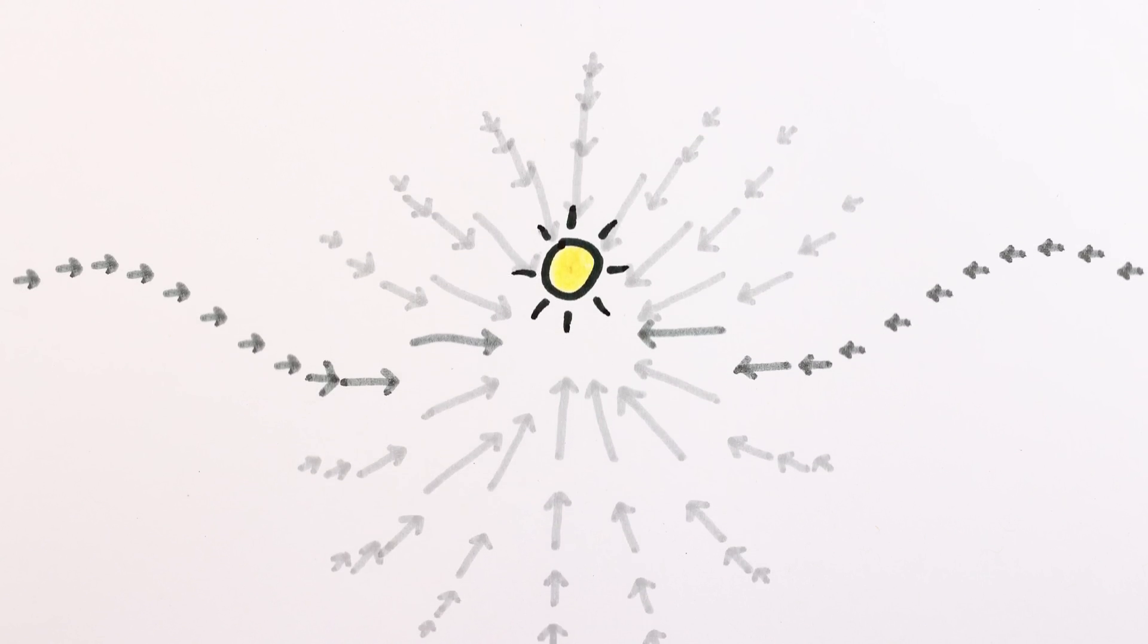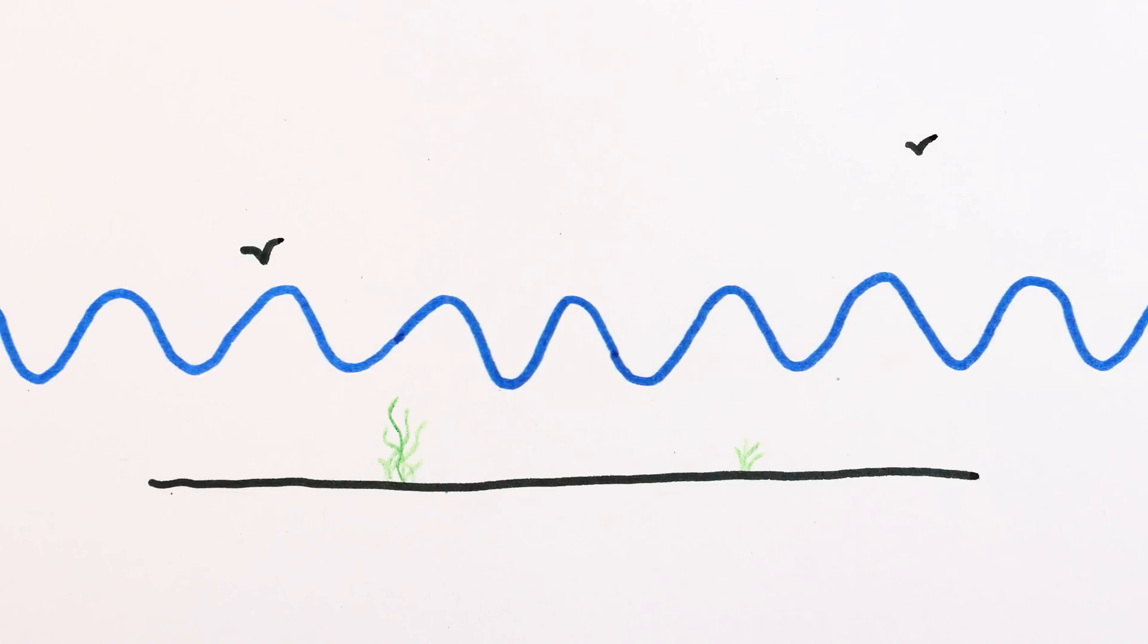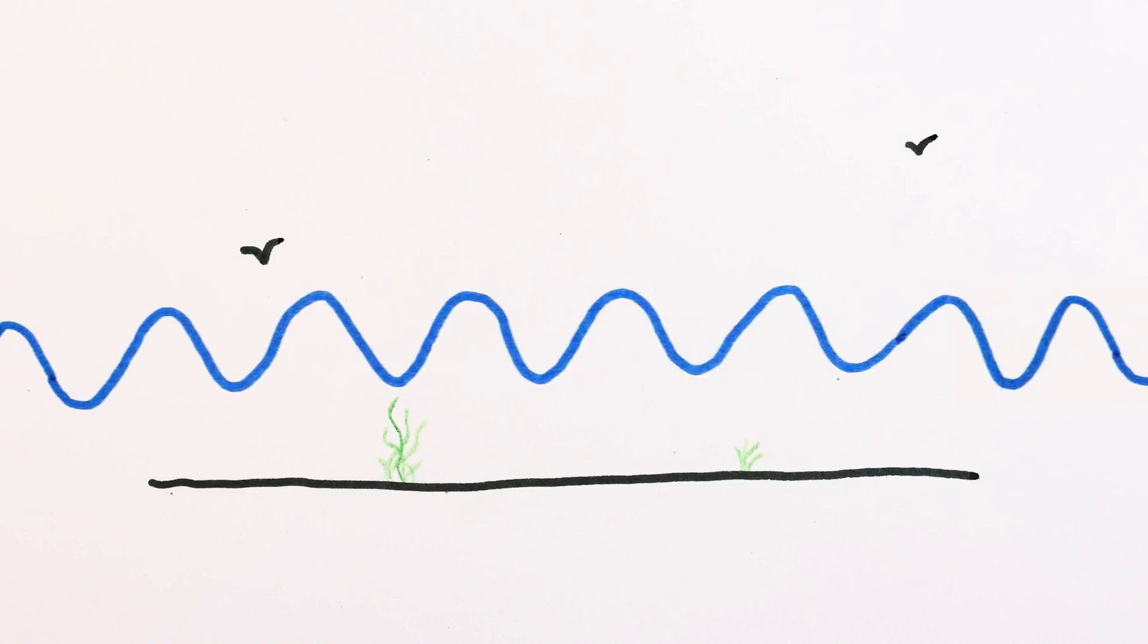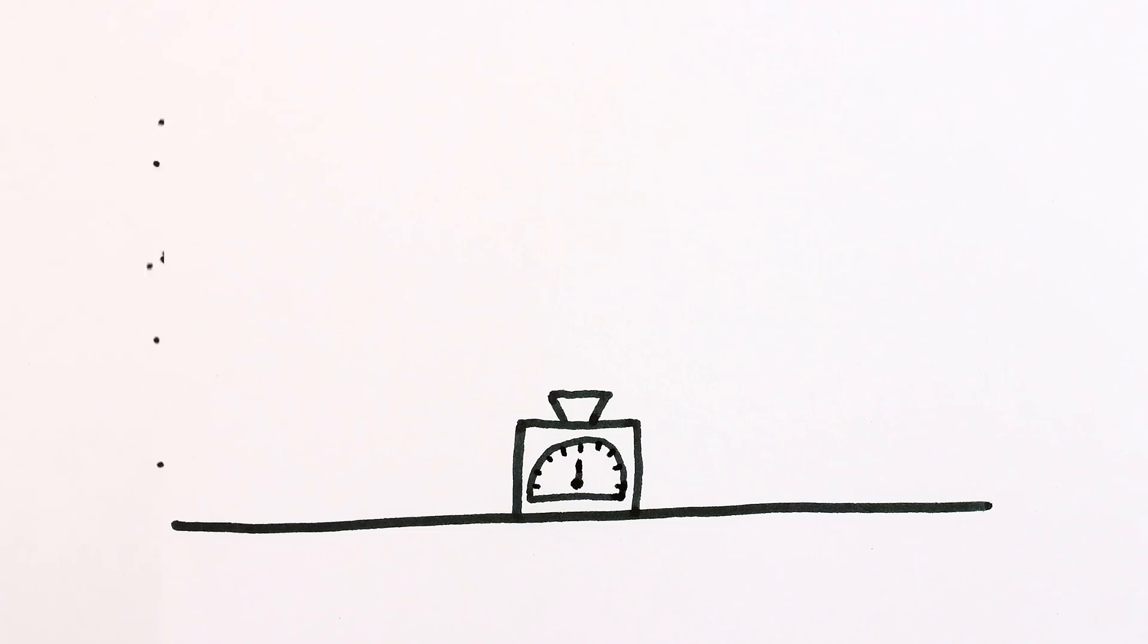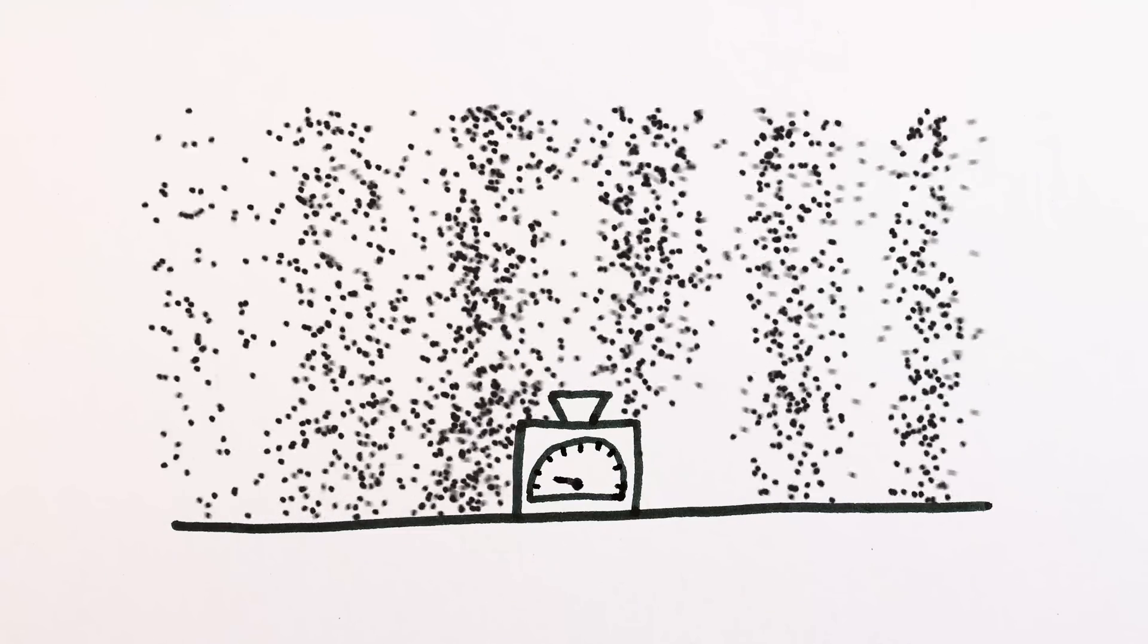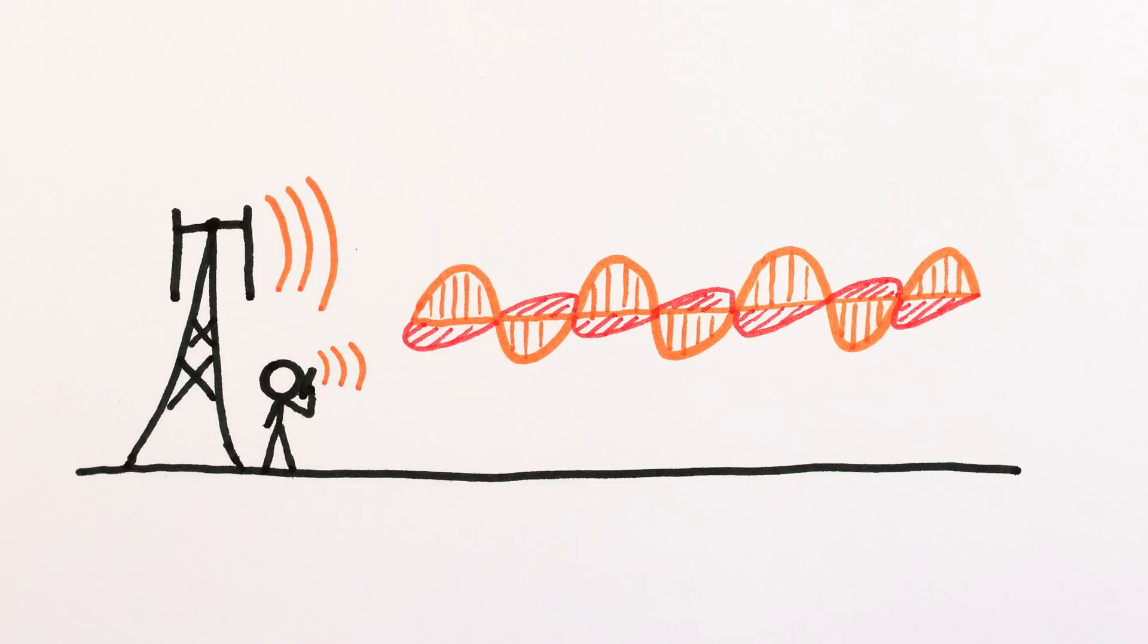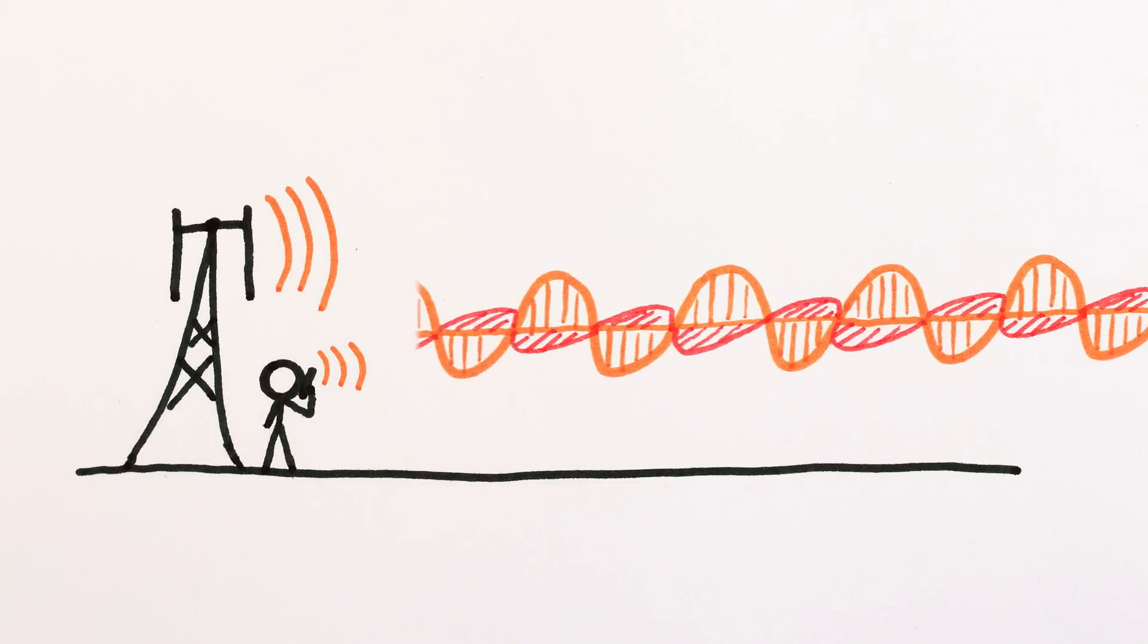So what's doing the waving? In the case of water, the height of the water increases and decreases at any particular location as the waves travel past. In the case of sound, the pressure of the air increases and decreases at any particular location as the waves travel past. In the case of radio or cell phone signals or any other electromagnetic waves, the electric and magnetic fields get stronger and weaker at any particular location as the waves travel past.